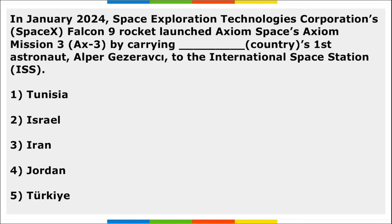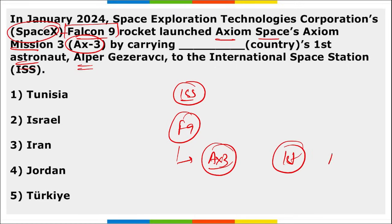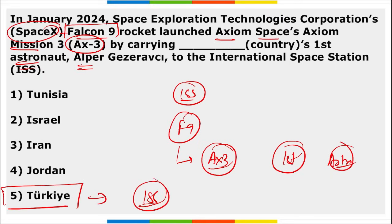SpaceX's Falcon 9 rocket launched the Axiom Space Mission 3 (AX3), which carried Turkey's first astronaut to the International Space Station.